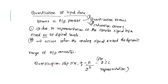In sign-magnitude or one's complement representation of binary numbers using B bits, we can generate 2 to the power of B minus 1 different binary numbers. We are going to split this into two different categories: one for two's complement representation and the other for sign-magnitude or one's complement representation.